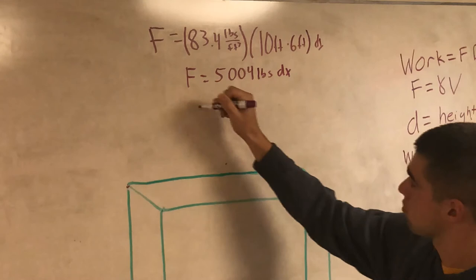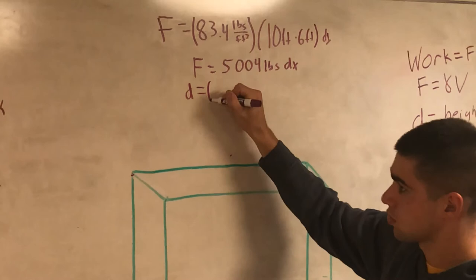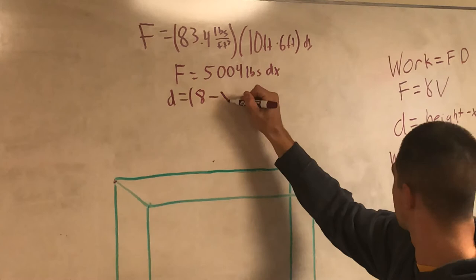Now you've got to find your distance, which equals your height, which is 8 feet, minus x.